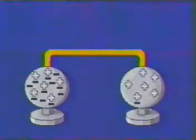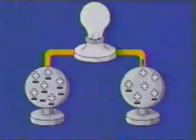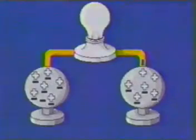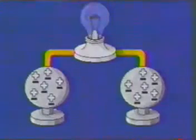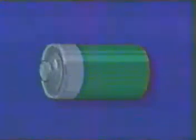A chemical reaction inside the battery, or dry cell, is its secret to success. This reaction causes the outside zinc layer to become negatively charged, and it causes the graphite rod in the middle to acquire a positive charge. We call these two charged parts electrodes.